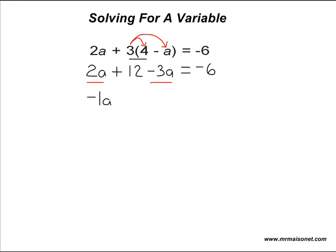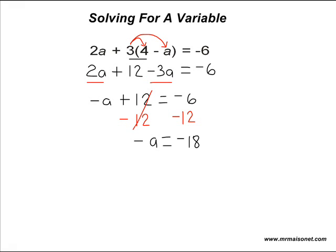Now we must combine the terms positive 12 and negative 6. Because they are on opposite sides of the equal sign, we must send one term to the other side. The opposite of adding 12 is to take away 12, which cancels it on the left-hand side. We then send it to the right-hand side: the sum of negative 6 and negative 12 is negative 18. So our simplified equation reads as negative 1a is equal to negative 18.